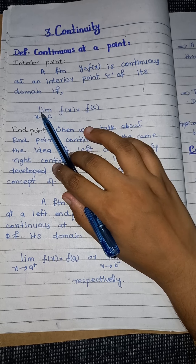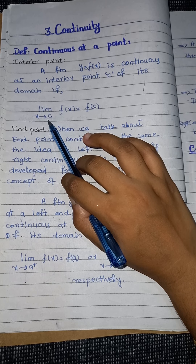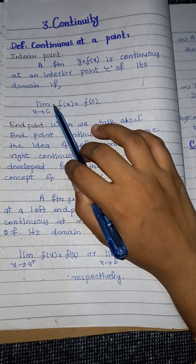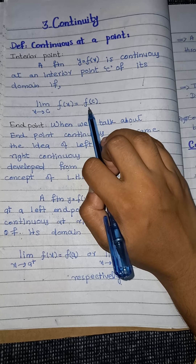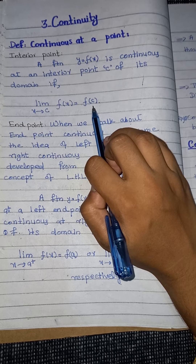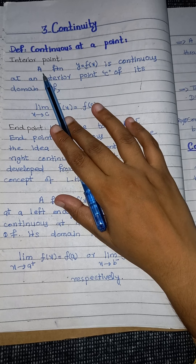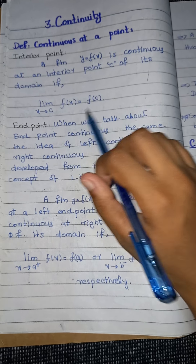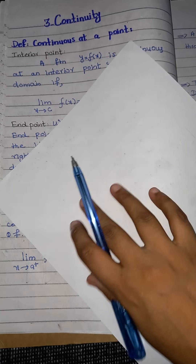That is, if we take the limit as x approaches c of f(x) and it gives the same answer as f(c), then we say that the function is continuous at that interior point.